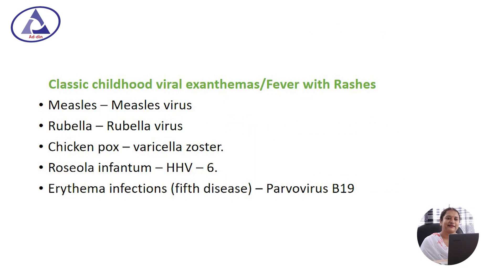What are the classical childhood viral exanthems or fever with rashes? The most common cause is measles, occurring due to measles virus; rubella by rubella virus; chickenpox by varicella-zoster virus; roseola infantum due to human herpesvirus 6; and parvovirus B19 causes erythema infectiosum or fifth disease.